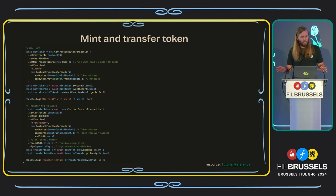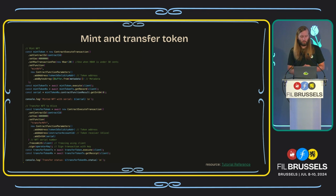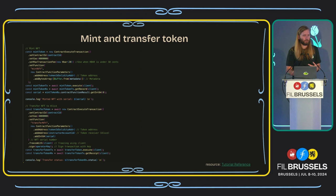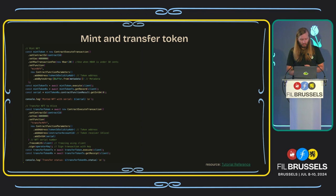After all that, we have a smart contract, we've created a new token class, and we've minted on that token class. Now we need to send it to somebody — it's no good just sitting in the smart contract. We do a new contract execution transaction, set the ID, and call the function transferNFT. We add the function parameters of the Solidity address. The instructor account ID is the hard-coded account ID for the demo, ready to take any NFTs you make from these project files. You add which serial number you're sending — if you minted 200, you need to specify the serial number. After that, we freeze with the client, sign with the operator key, and then execute the transfer with the initialized client and get the receipt.